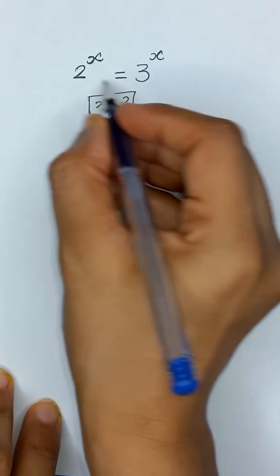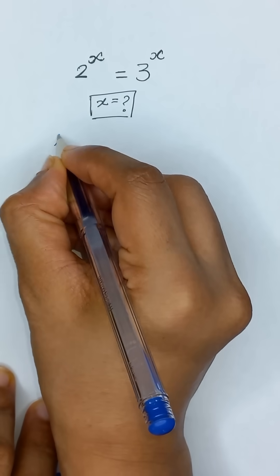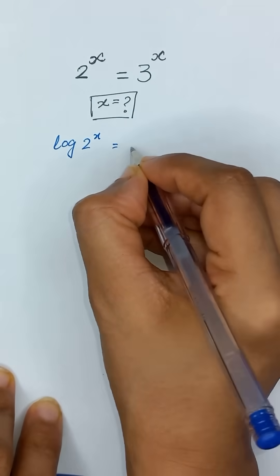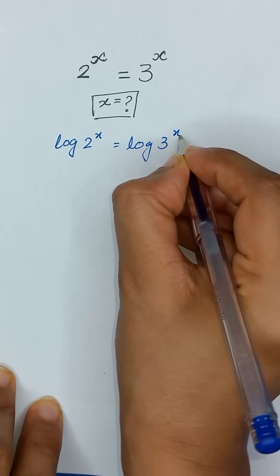So first of all, I will apply log on both sides. So it will become log of 2 to the power x is equal to log of 3 to the power x.